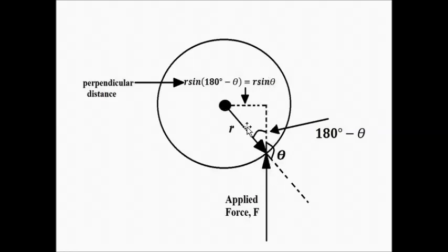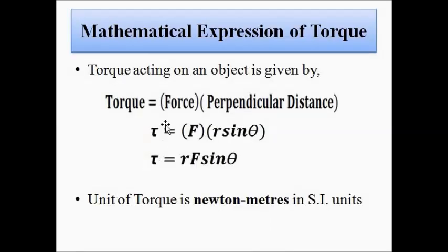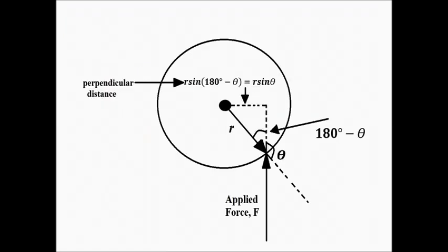The perpendicular distance from the center of rotation to the point of impact is r sinθ, so torque is F × r sinθ. Torque is represented by the symbol tau: τ = Fr sinθ. The unit of torque is Newton-meters (N·m) in SI or MKS units.